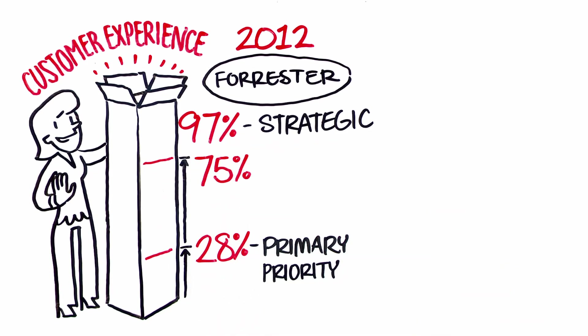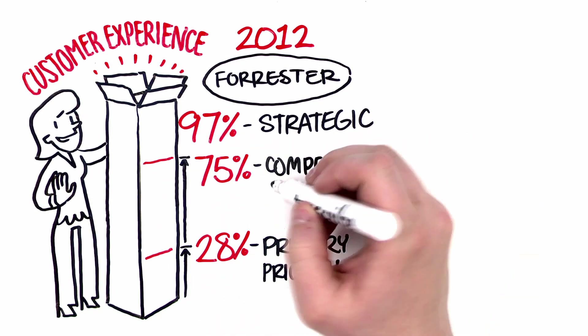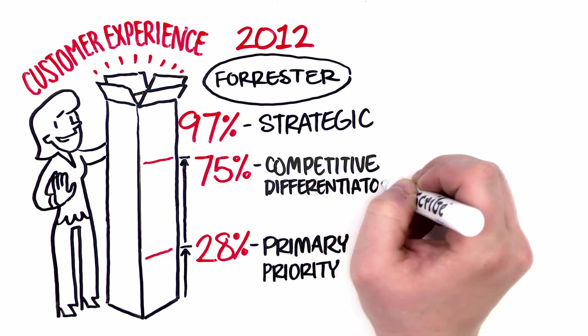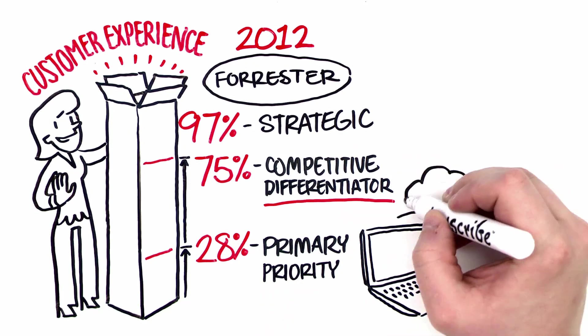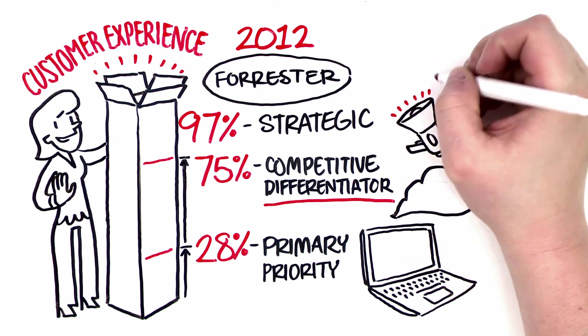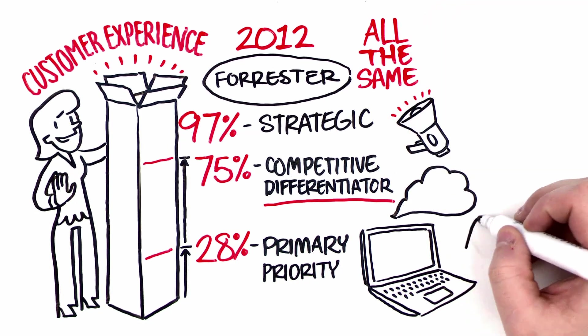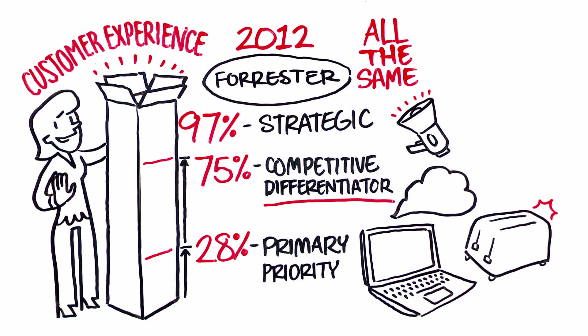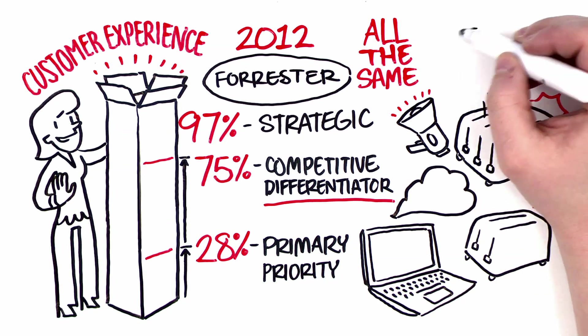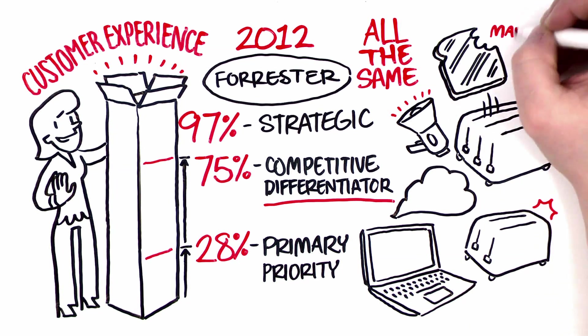75% of companies hoped to make customer experience a competitive differentiator. Today, hardware and software and offers are undifferentiated. Marketing devolves to offering customers a four-slice toaster to convert, but then the competition offers a six-slice toaster, and the margins get vanishingly thin.